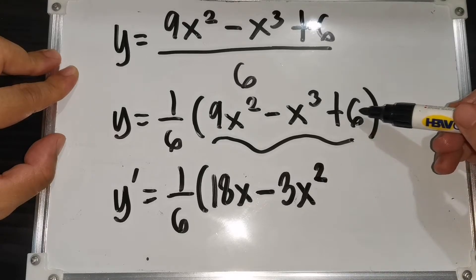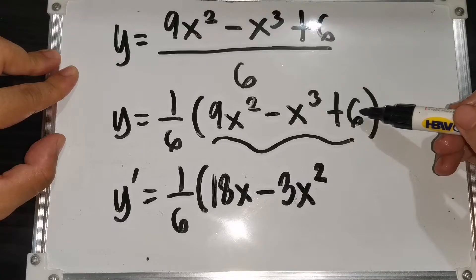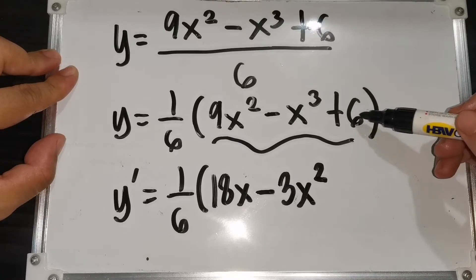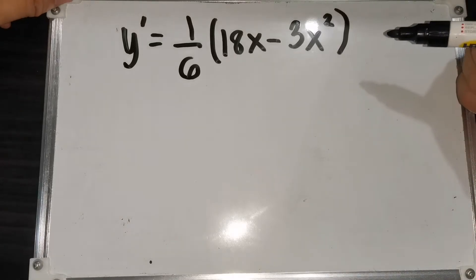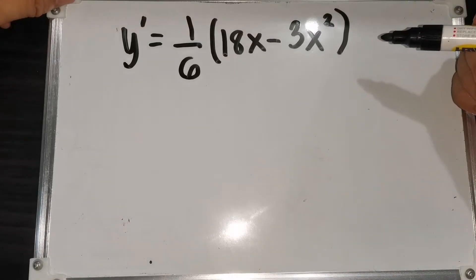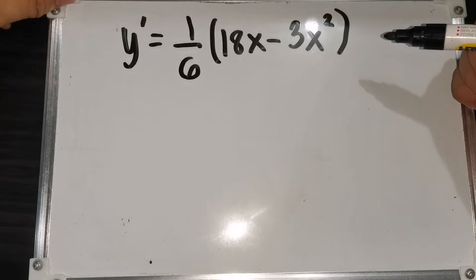The derivative of a constant is always equal to 0, so we don't need to include it. So our first derivative y' = (1/6)(18x - 3x²). Now let's move on to the second derivative.